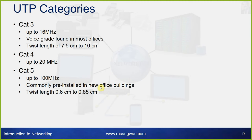UTP categories: Category 3 supports up to 16 MHz, is voice grade, found in most offices, with a twist length of 7.5 to 10 centimeters. Category 4 supports up to 20 MHz. Category 5 supports up to 100 MHz, is commonly pre-installed in new office buildings, with a twist length of 0.6 to 0.85 centimeters.